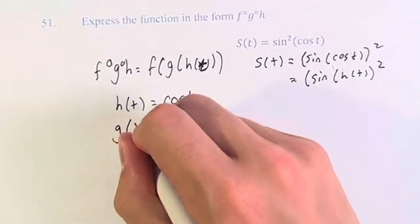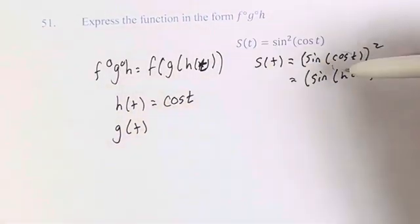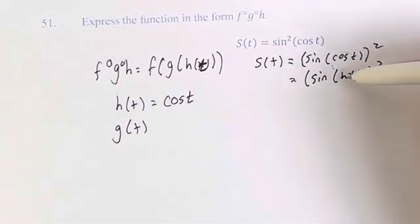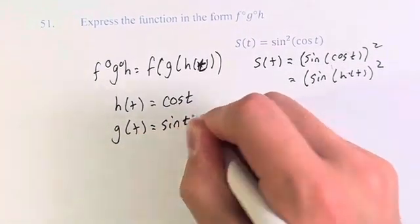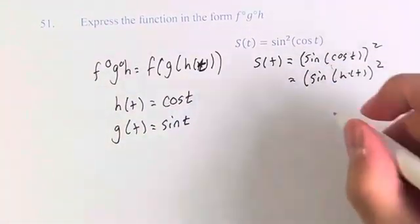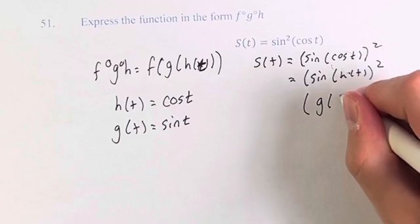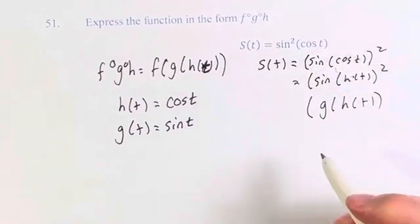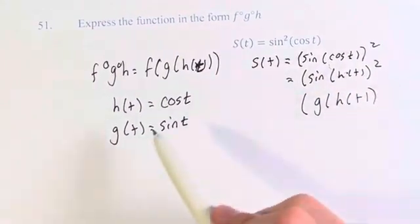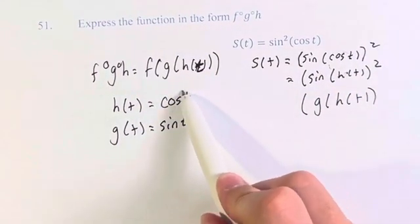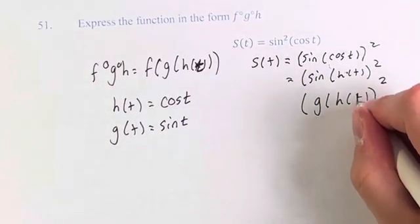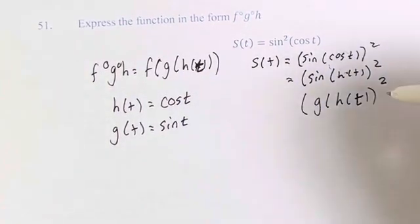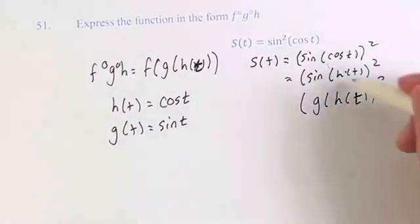Moving one step outwards for g of t — g is taking on h of t. Therefore, g of t in this context is sine. So if g of t is sine of t, then g of h of t is sine of cosine of t, which is what we're seeing within the squared parentheses.